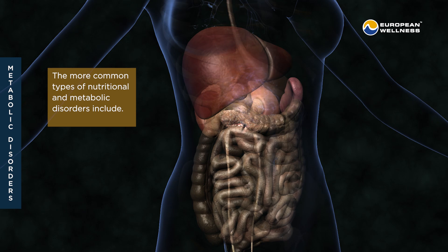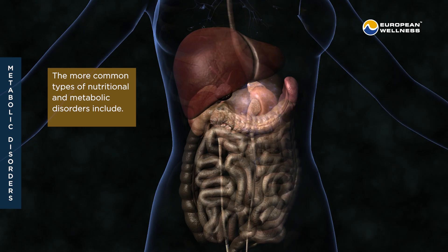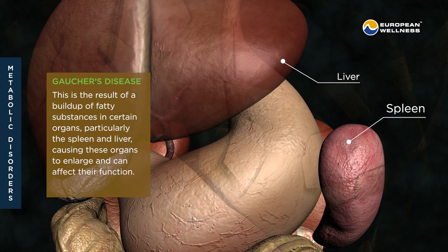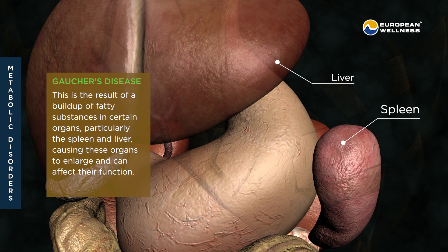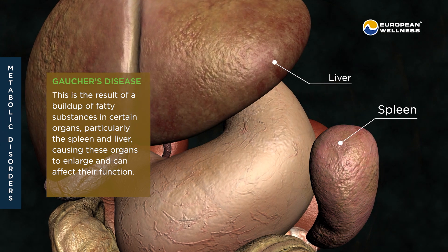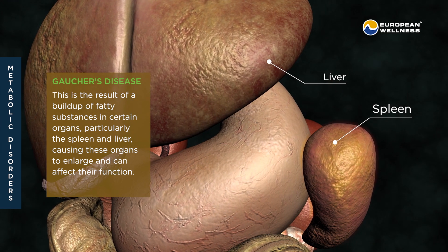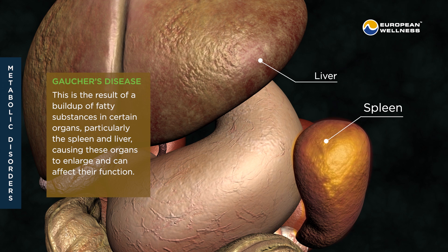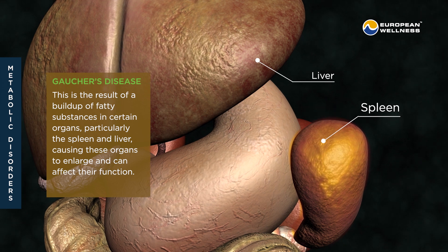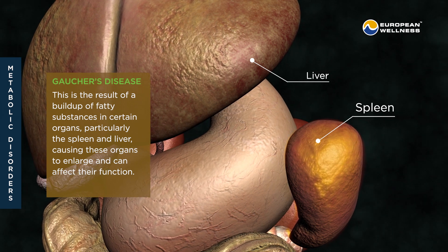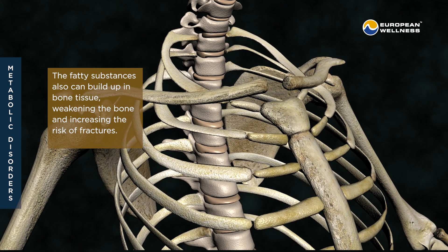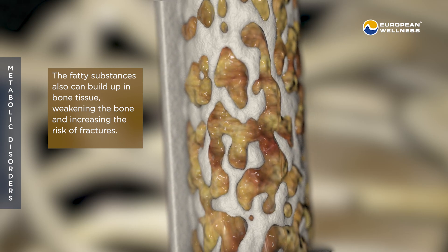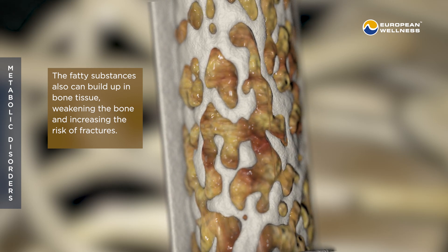The more common types of nutritional and metabolic disorders include conditions such as Gaucher's disease — the result of a buildup of fatty substances in certain organs, particularly the spleen and liver, causing these organs to enlarge and affecting their function. The fatty substances can also build up in bone tissue, weakening the bone and increasing the risk of fractures.